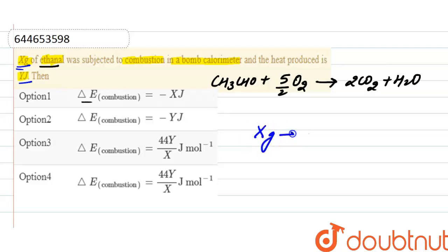For X gram, one mole of ethanol, how much heat must be produced? As one mole of ethanol contains 44 gram of ethanol because the molecular mass of ethanol is...